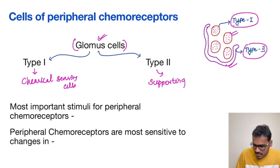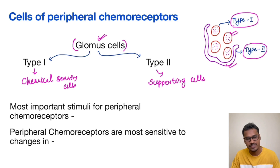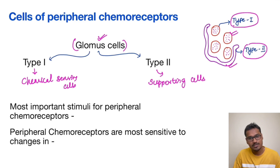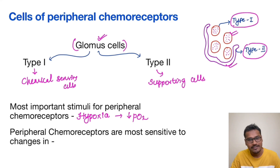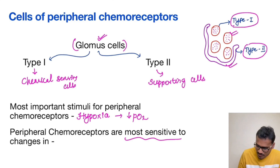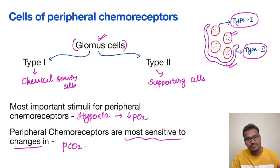Type 1 cells have numerous vesicles containing neurotransmitters responsible for peripheral chemoreceptor action, and these signals are carried by the glossopharyngeal nerve and vagus. The most important stimulus for peripheral chemoreceptors is hypoxia — that is, a decrease in PO2. The peripheral chemoreceptors also behave like central chemoreceptors in that they are sensitive to changes in PCO2. So both central and peripheral chemoreceptors are sensitive to PCO2 changes, but stimulated by different factors: H+ for central, and hypoxia for peripheral.